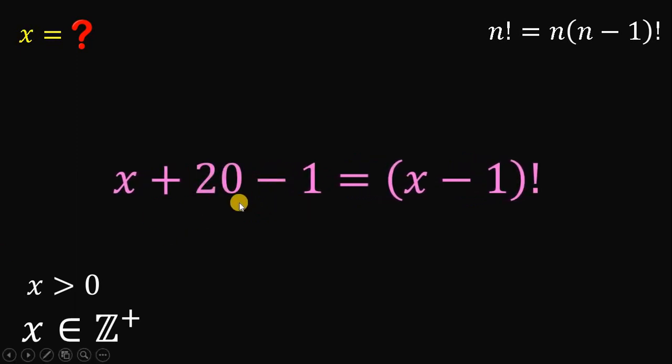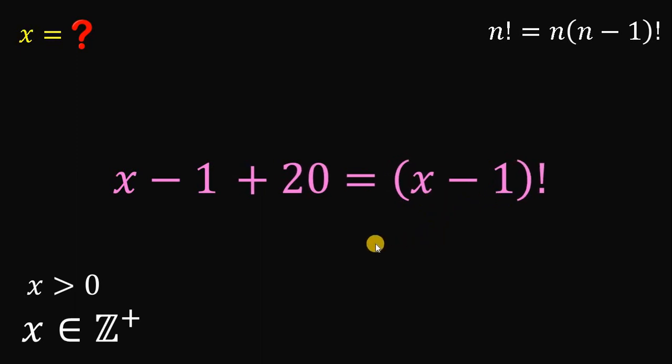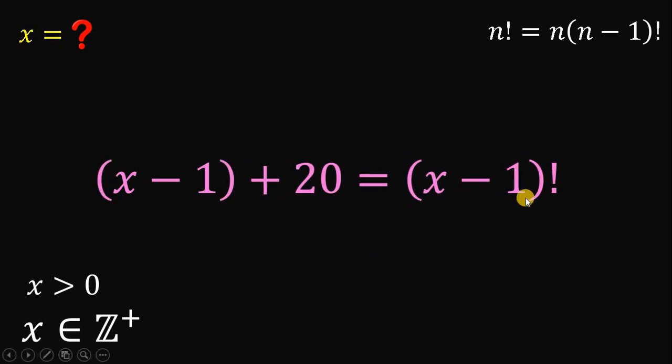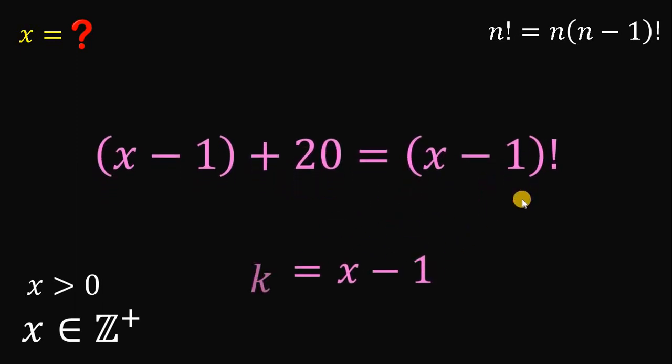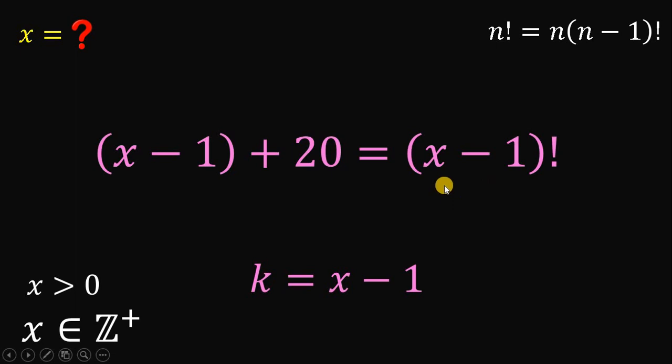Why do we do that? Because if we rearrange some terms a little bit, we have now a term which is x minus 1. And on the right-hand side, we also have a term which is x minus 1. So what we're going to do here is to let k be equal to x minus 1. Therefore, all terms having x minus 1 can be replaced by the variable k.